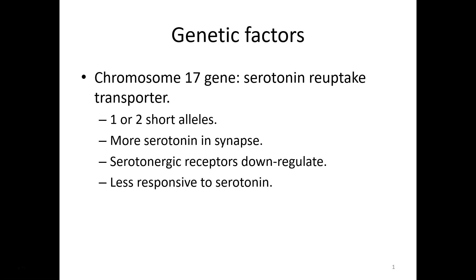I mentioned in the last lecture that there is no depression gene. Typically, for something as complex as a mood disorder, multiple genes are probably going to be involved, and they also have to interact with the environment in very specific ways. One chromosome that has been particularly interesting for researchers is the chromosome 17 gene that codes for a serotonin reuptake transporter. A gene is a segment of DNA that codes for a particular protein, and genes have two different alleles, one on each DNA strand, and these can come in different forms.